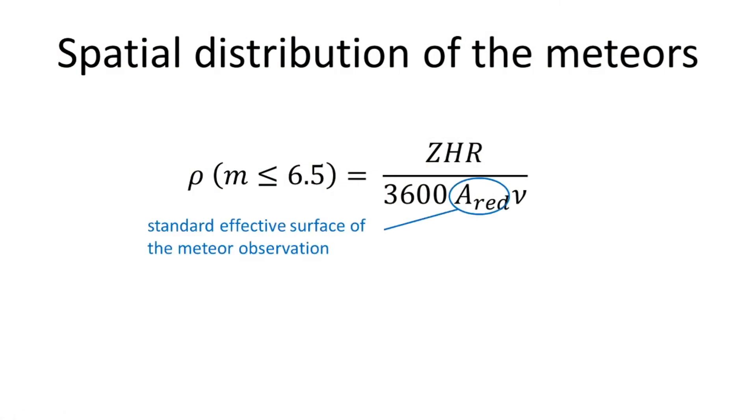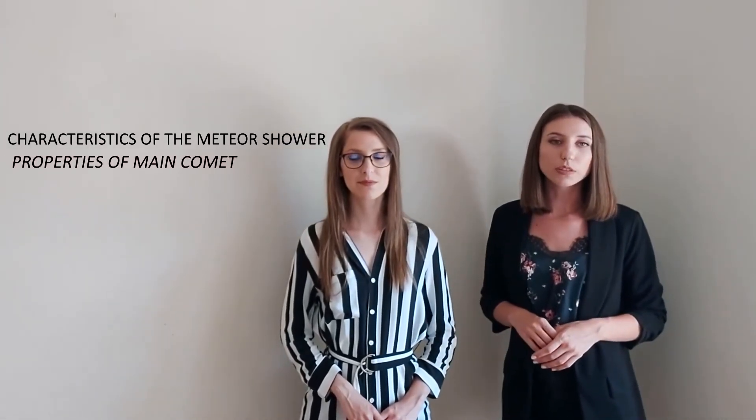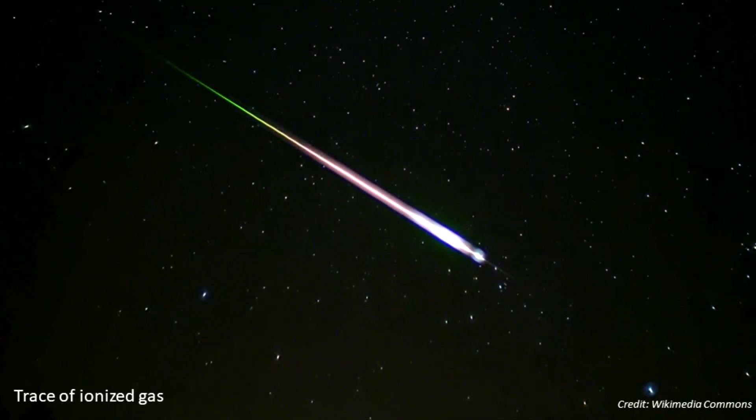The spatial distribution of meteors brighter than 6.5 is standardized per the relation shown on the screen, where A is the standard effective surface of the meteor observation and LI is the meteor velocity. It is in our interest to calculate the density and that information we get with the second formula. Finally, by analyzing all the collected data, we came to general characteristics of the observed meteor shower. And based on the knowledge of the meteor shower, we came to information about the properties of the main comet from which it was formed.